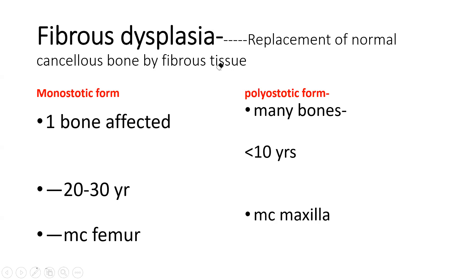Fibrous dysplasia can be two types: monostotic (one bone affected) and polyostotic (many bones affected). If a disease affects multiple bones or multiple systems, it tends to be syndromic. Polyostotic affects many bones and occurs in children under 10 years. Monostotic affects one bone and occurs at a later age — around 20–30 years.